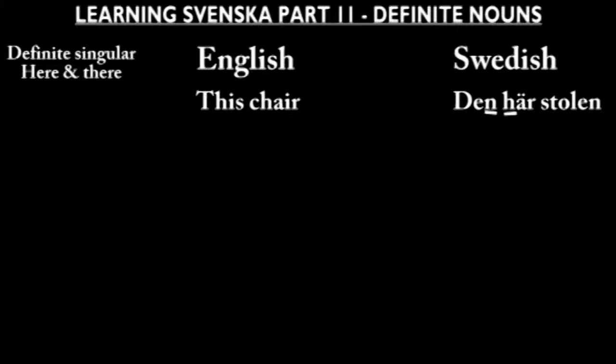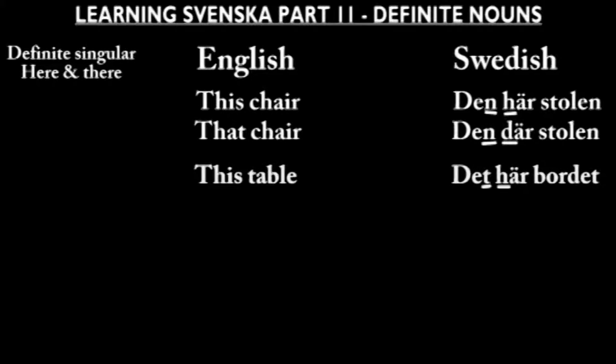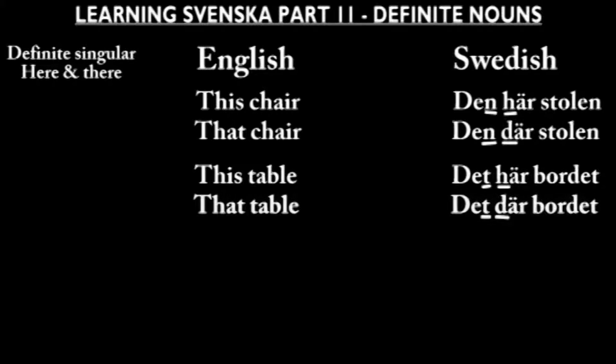In Swedish, 'here' is här and 'there' is där. 'This' is den här for n-words and det här for t-words. A direct translation from Swedish to English would be something like 'the here' or 'the there', but that obviously doesn't make grammatical sense. So let's look at the examples: den här stolen, den där stolen, det här bordet, det där bordet.